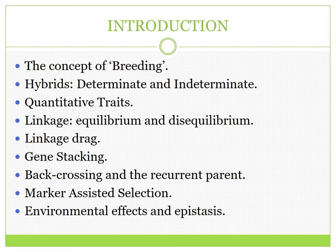To begin with, we have to understand the concept of breeding, which involves the crossing over and hybridization of two varieties of plants to derive a new or novel hybrid. Hybrids can be determinate and indeterminate. In the case of determinate hybrids, the two parental genotypes are known. In the case of indeterminate hybrids, one of the parents will be unknown.